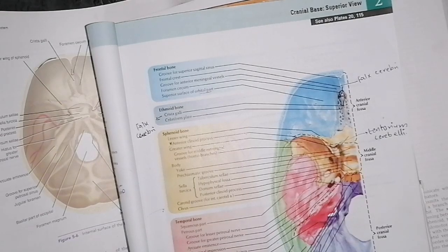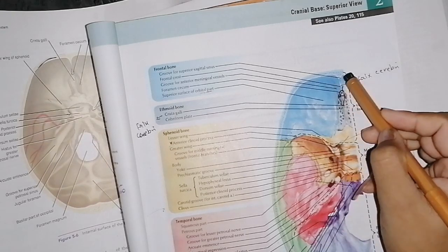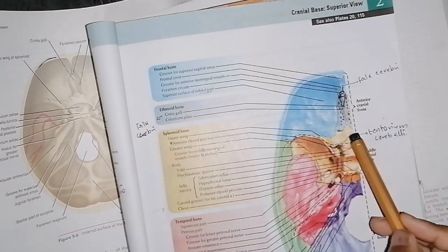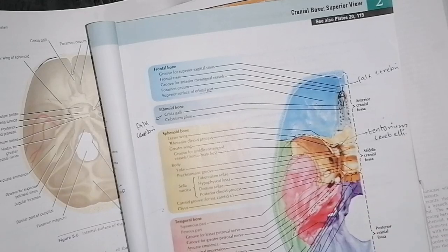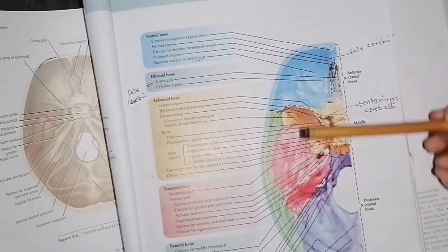Hello students, we will learn about the cranial cavity. There are two regions of the cranial cavity: one is the vault region and one is the base. The base is further divided into three cranial fossae. We will learn the anterior cranial fossa, the middle cranial fossa, and the posterior cranial fossa. This is the skull base.